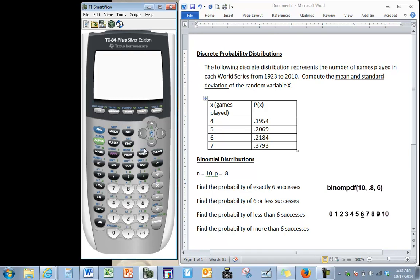One way to find it is under distributions which is right above vars. So since it's in blue we press the second button then vars, and you can either scroll down or go backwards and scroll up. So binomial pdf, press enter. Here my stat wizards is on so this is for the new operating system.